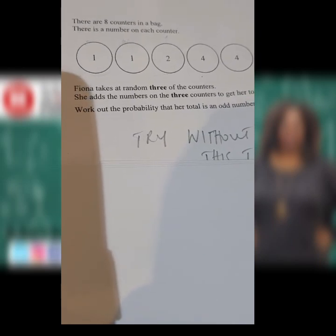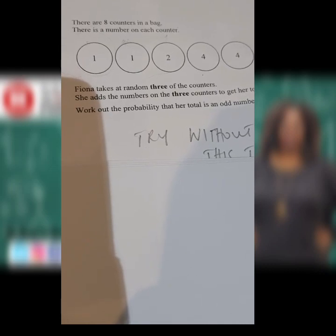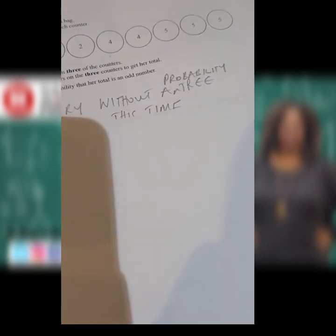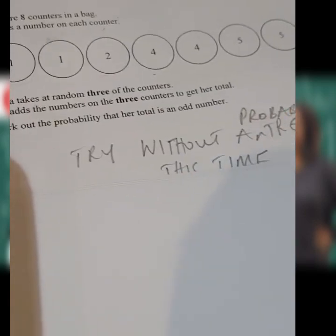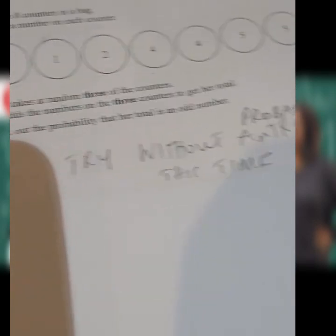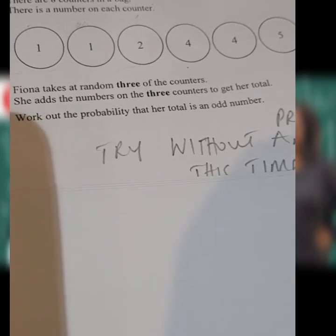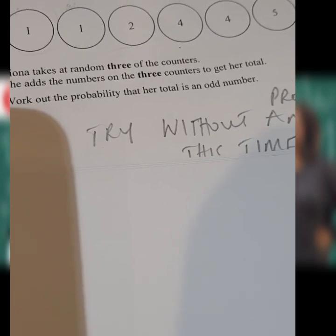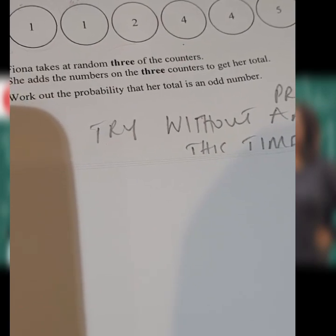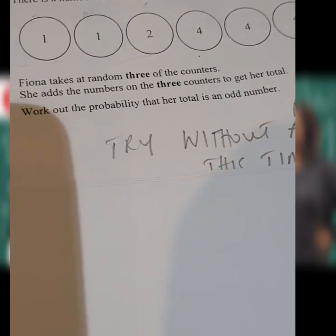The probability of getting an odd number from the counters as they stand is 5 out of 8. And for even numbers, it will be 3 out of 8. Now, what are the combinations we can have to make sure that those 3 counters that Fiona picked give an odd total when we add them together?